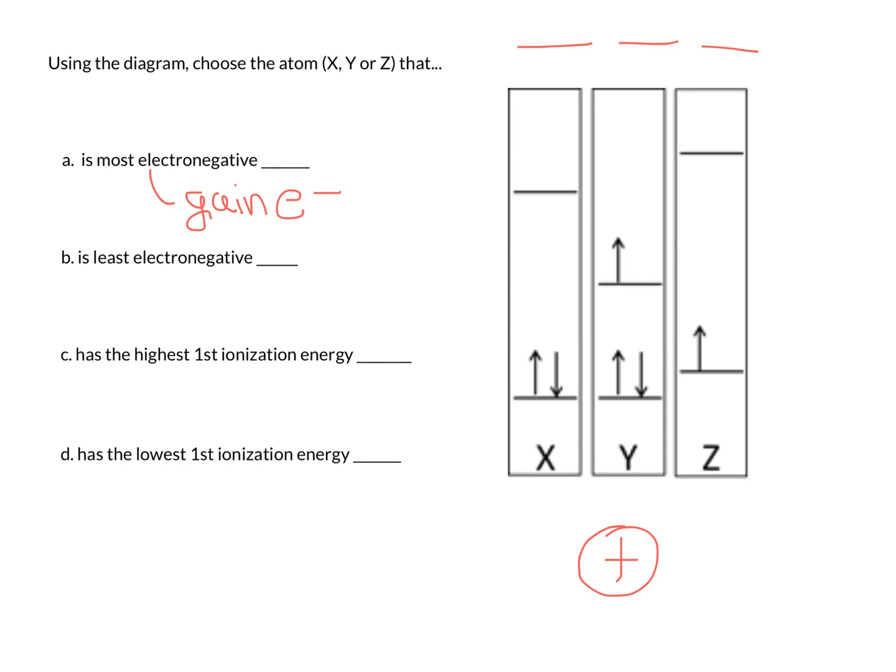If I look at where an electron can go in element X, it certainly cannot go down here because the orbital is full with two electrons. However, we can put an electron up here. So, that's our choice for where to place an electron for X.